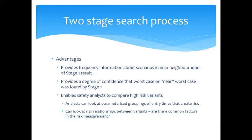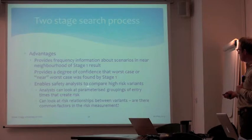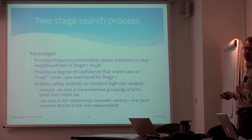We think this is a nice approach with practical use for air traffic controllers looking at safety. You can use the search to find the initial high-risk scenario, then use intensive sampling around that result to find any near variants. Those near variants might simply involve different aircraft timing, or perhaps another incident of some sort in the neighborhood. Once you've found your variants, you can look at parameterized groupings of entry times that create the risk and run further results around those.